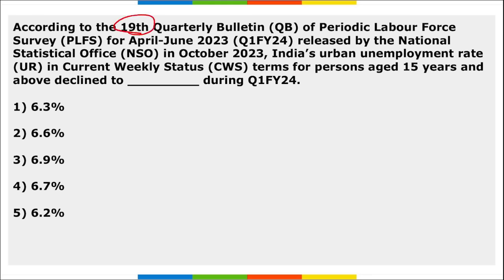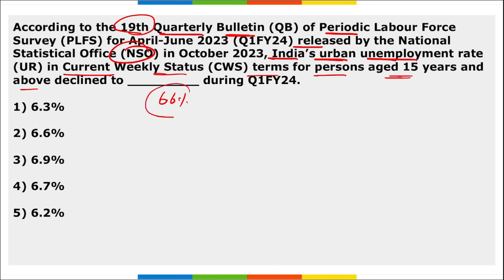According to the 19th quarterly bulletin of the Periodic Labour Force Survey released by NSO in October, India's urban unemployment rate in current weekly status terms for persons above 15 years declined to 6.6% during the first quarter of fiscal year 2024 — right option is option two.